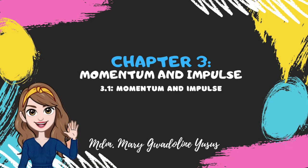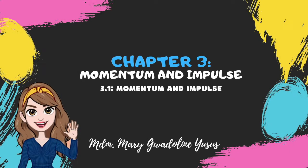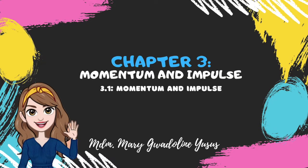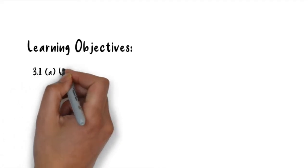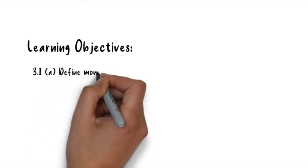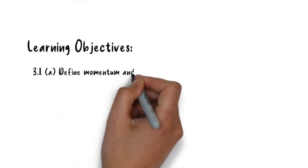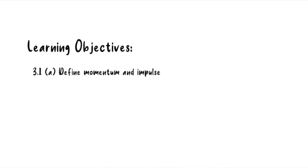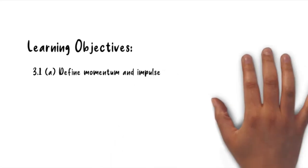Hello everyone, in this video I'm going to cover the third chapter: momentum and impulse. The learning objective we need to achieve today is to define momentum and impulse, in which impulse is represented as J = F∆t.